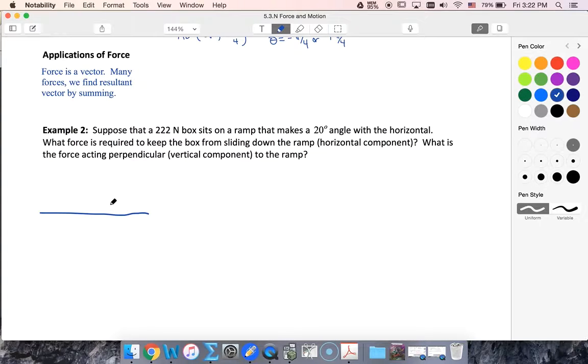So 20 degrees, it's going to be something like this. And then I'm going to put a box on top of it. And it is 222 Newtons. So that is the weight of my box. It's going to be pulling down. That's the way that gravity works.